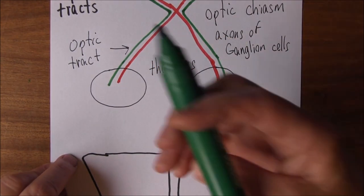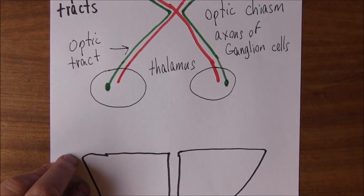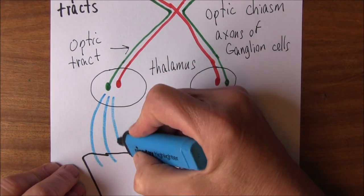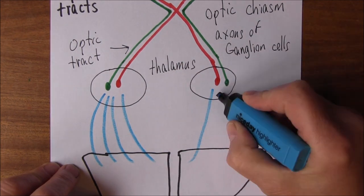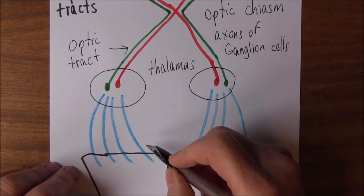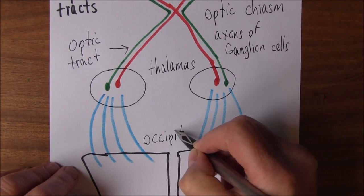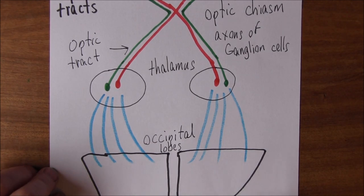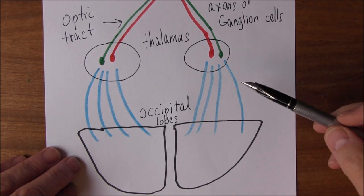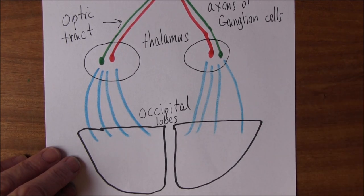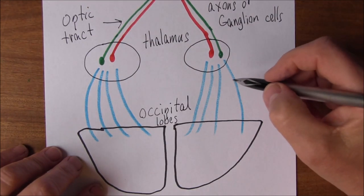The next thing that happens is those neurons terminate in synapses and communicate with another set of neurons. These neurons radiate out to the visual areas — the right occipital lobe and the left occipital lobe — and this is where the primary visual centers are. Because these spread out a bit, these are called the optic radiations.